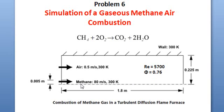The air velocity is 0.5 meter per second and the temperature of the air is 300 Kelvin. The velocity of methane is 80 meter per second and the temperature is 300 Kelvin. The length of our combustion chamber is 1.8 meter. First of all we will develop this fluid domain and then we will try to see the combustion process.